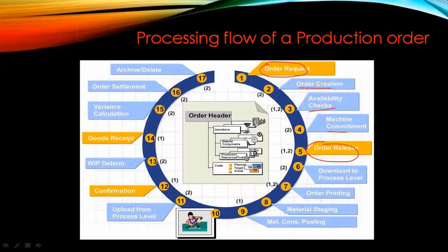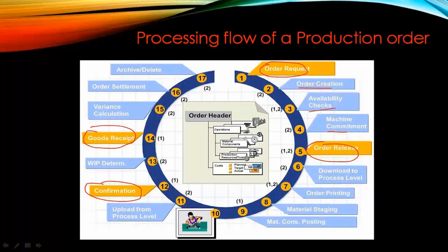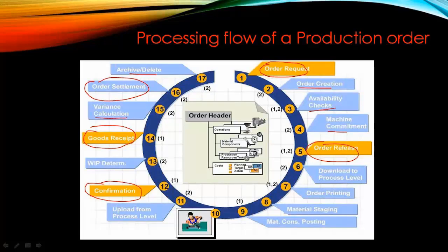After releasing the order, there are more steps: material staging, order printing, and everything. Then you confirm the order — confirming means the processing of the order is complete. The system understands that goods are now received in stock. Finally, we post goods received, which means the order has finished production, stock is added to finished goods inventory. From the finance and costing side, they will do order settlement, variance calculation, and costing. Finally, the order may be archived or deleted.